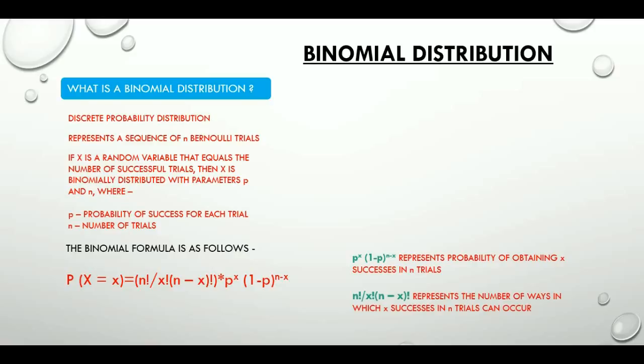An important point to note here is that the mean of a binomial distribution is np, and the variance is np multiplied by (1-p).